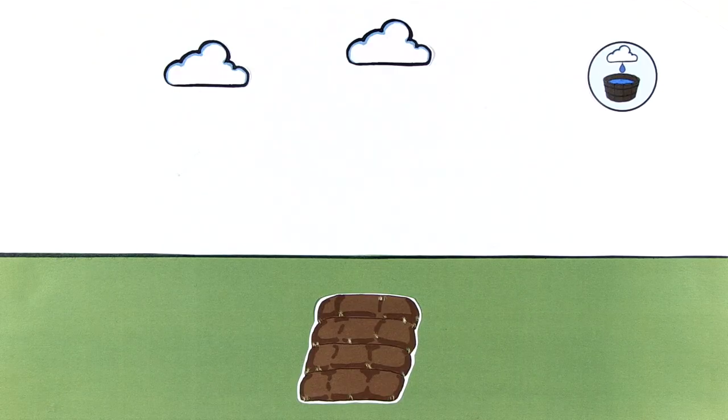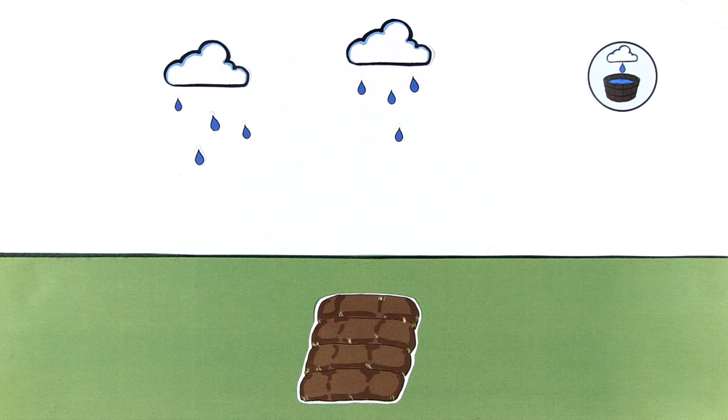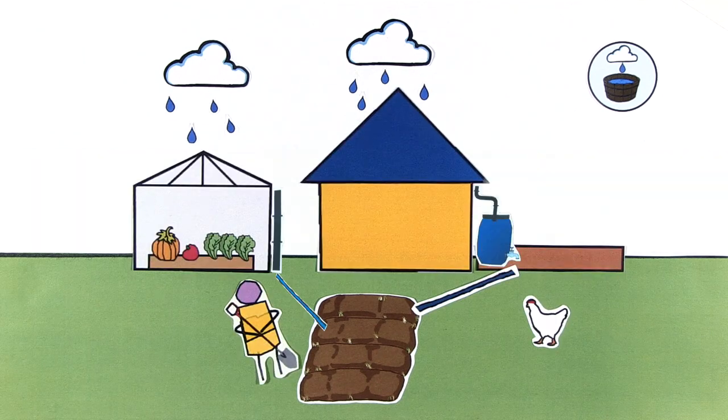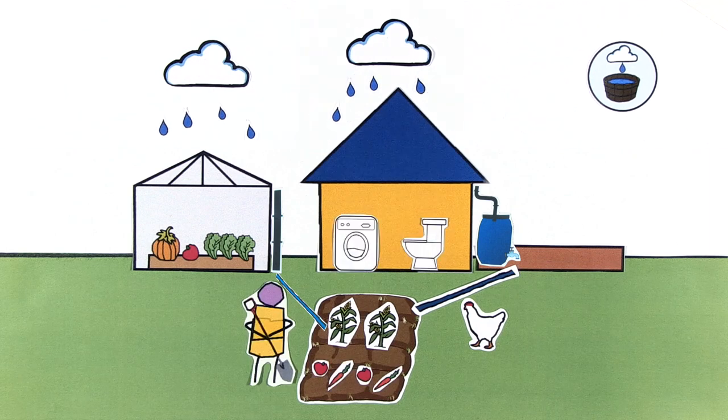Rooftop and courtyard harvesting systems collect and store rainwater from buildings, greenhouses, courtyards, and other structures to use for agricultural or domestic purposes.